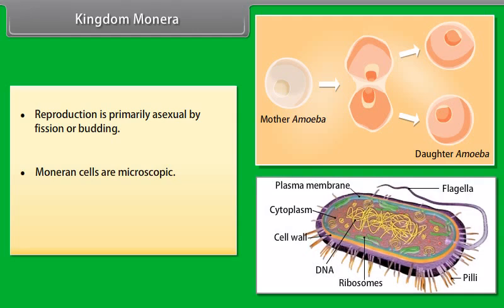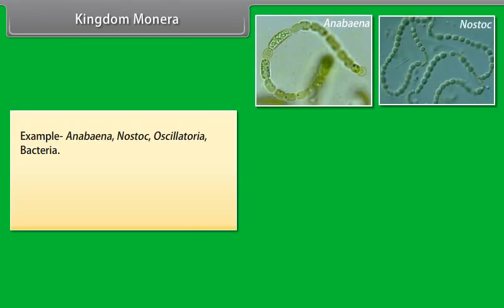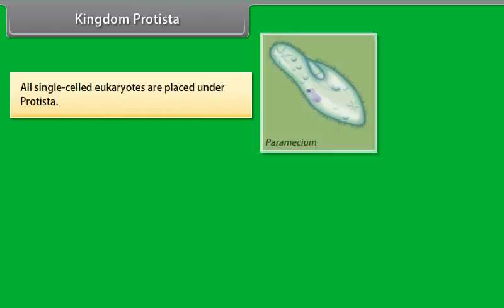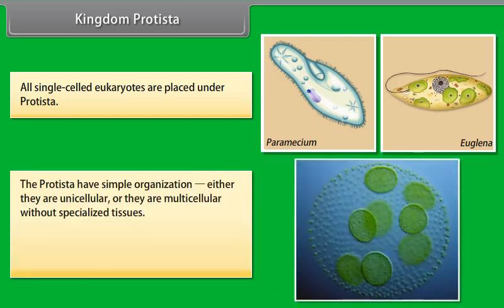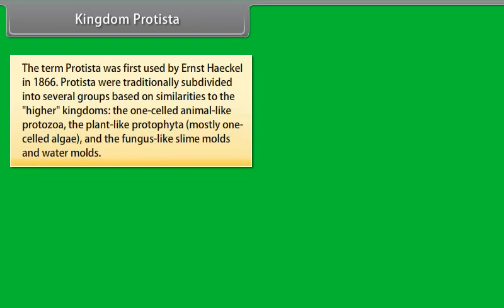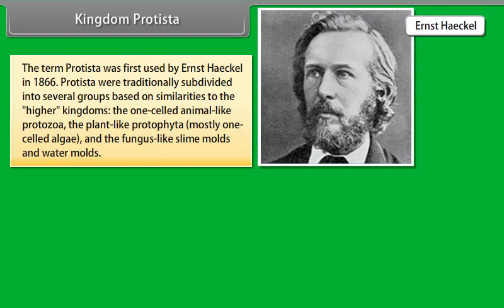Kingdom Monera. The main characteristics of Kingdom Monera are that they lack nuclear membranes, are devoid of plastids, mitochondria, and advanced 9+2 strand flagella. They are typically unicellular organisms. The predominant mode of nutrition is absorptive, but some groups are photosynthetic or chemosynthetic. Reproduction is primarily asexual by fission or budding. Moneran cells are microscopic and most organisms bear a rigid cell wall. Examples: Anabaena, Nostoc, Oscillatoria, Bacteria. The kingdom Monera is divided into two sub-kingdoms: Archaebacteria and Eubacteria.